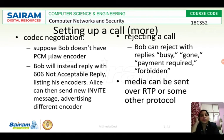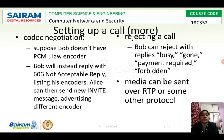For codec negotiation, if Bob cannot accept the encoding type sent by the source (Alice), Bob sends a new INVITE message advertising a different encoding type. For rejecting a call, if Bob doesn't want to talk with Alice, he can reject by sending a 'Busy,' 'Gone,' 'Payment Required,' or 'Forbidden' message.